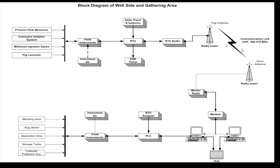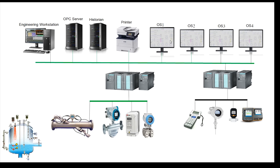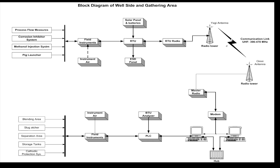At the receiver end, you have an omni antenna. A radio tower is connected to a master radio, which connects to a modem to convert the signal into Ethernet. That is then connected to the MTU — the Master Terminal Unit. From there you have the typical arrangement: engineering workstation, OPC server, historians, and operator screens, similar to the factory-centered setup.